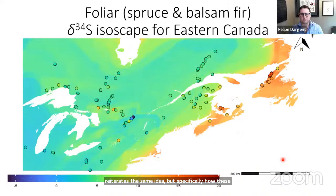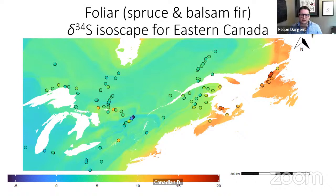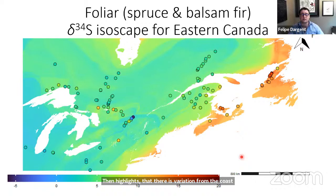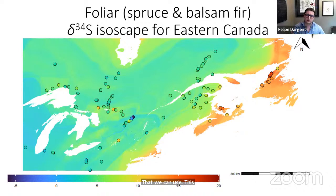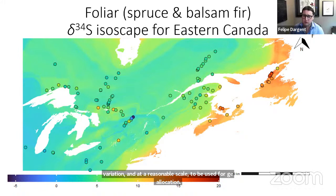This is the first, to our knowledge, Canadian δ34S isoscape for leaves. It covers a range from about 20 per mil down to about minus 5 per mil, which is a nice range. It highlights variation from the coast to inland areas, and the gradient is a lot more gradual than the 10 kilometers suggested in a few recent papers. We have a slow, usable gradient, which means we have enough spatial variation at a reasonable scale for geolocation.